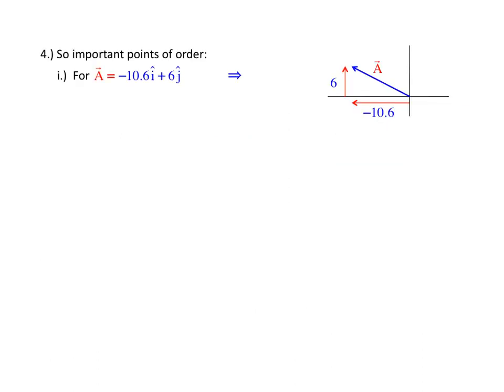Some minor bits of amusement. If you were given this vector and you were asked to graph it, you take the component, minus 10.6. You go across in the x direction, minus x direction. You take the 6 and you go up. And you graph out A.